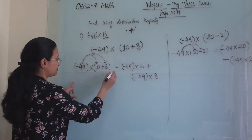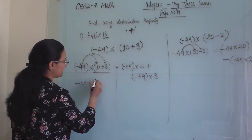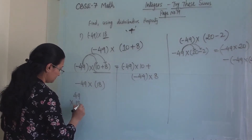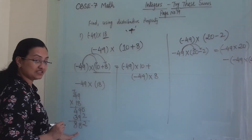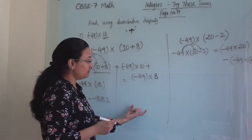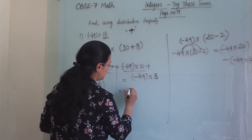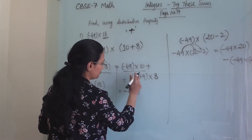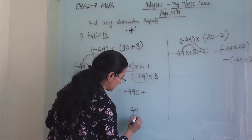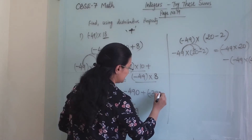Now let us solve this. Minus 49 into the bracket — if I solve I will get 18. Our answer is minus 882. Now let us solve the left hand side. Minus 49 into 10 gives minus 490, plus we have to solve minus 49 into 8, which gives minus 392.